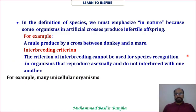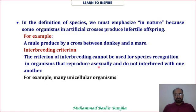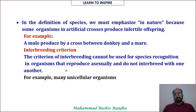A question arises: can the criterion of interbreeding be used for the classification of organisms that reproduce asexually? The answer is no — the criterion of interbreeding cannot be used for asexually reproducing organisms, because organisms that reproduce asexually do not interbreed with one another. For example, many unicellular organisms use asexual reproduction.